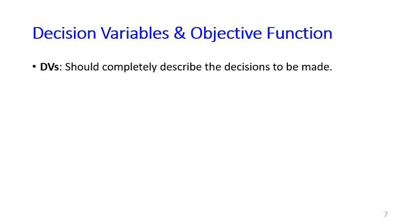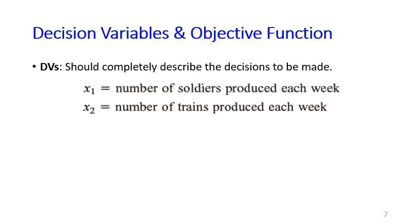Let's think about what decisions Giapeto must make every week. If you read the problem, you see that Giapeto must decide how many soldiers and how many trains to produce each week. Because at this point we don't know how many soldiers to produce — it could be 0, 1, 2, 3, 10, 27, or whatever — we use the symbol x1 to represent the number of soldiers produced each week.